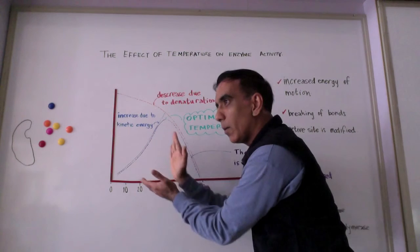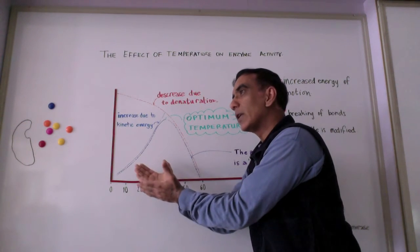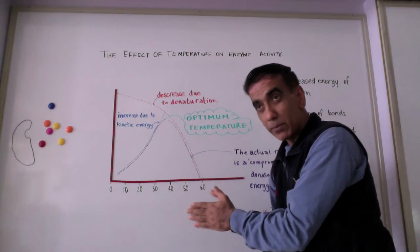So well before that optimum, many enzymes tend to double their rate for every 10 degrees Celsius rise in temperature.